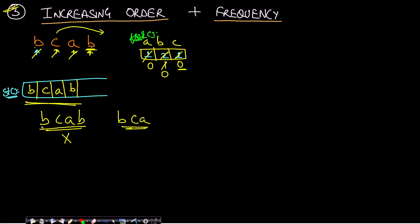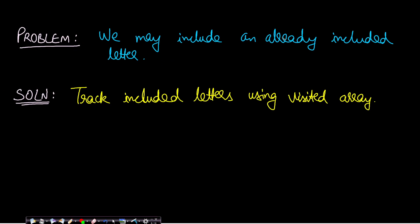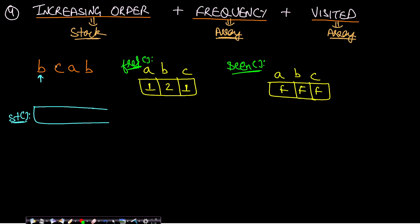The problem is we may include an already-included letter. The solution is to track included letters using a visited array — let's call it 'seen' — that marks whether an element has already been included in the stack.